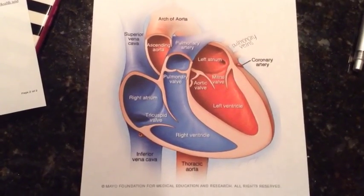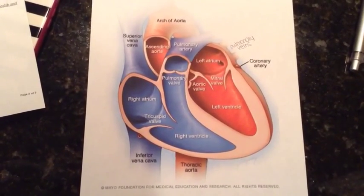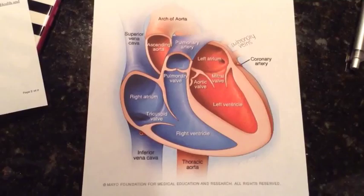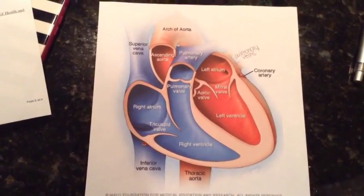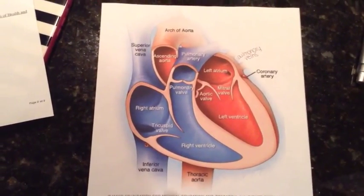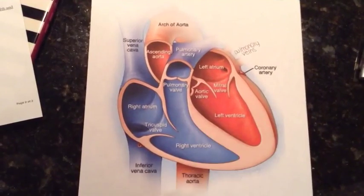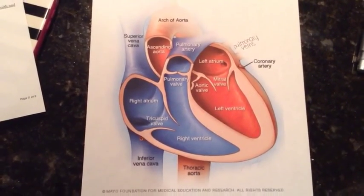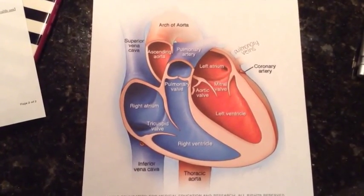As previously stated, the heart is divided into four chambers that are connected by heart valves. The upper two chambers are called atria. Atria are separated by an internal septum into the left atrium and right atrium.